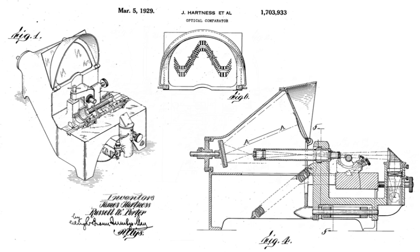In subsequent decades, optical comparators have been made by many companies and have been applied to the inspection of many kinds of parts. Today they may be found in many machine shops. The idea of mixing optics and measurement, and the use of the term comparator for metrological equipment, had existed in other forms prior to Hartness' work, but they had remained in realms of pure science such as telescopy and microscopy and highly specialized applied science such as comparing master measuring standards.